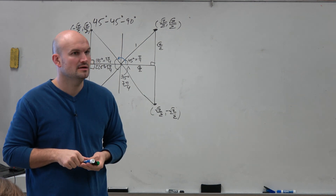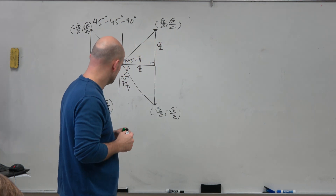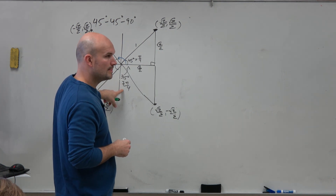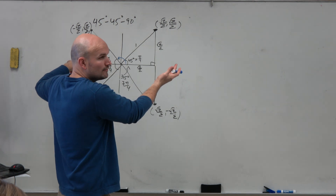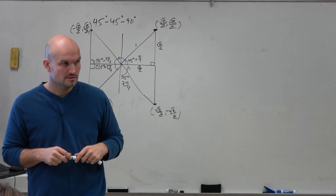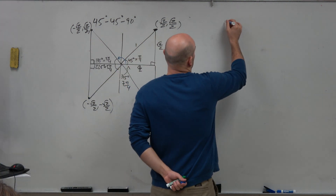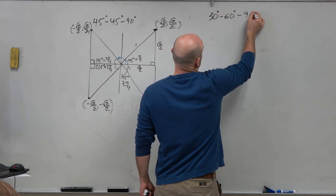Does anybody have any questions about finding the angles for the 45 degrees or pi over 4 section? The bottom left is 5 pi over 4, because halfway around the circle is pi, which in terms of fourths is 4 pi over 4. If you add pi over 4, you're at 5 pi over 4. Now let's continue this process into the 30-60-90 triangle.